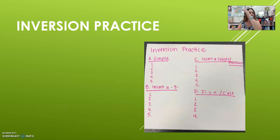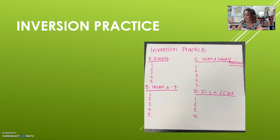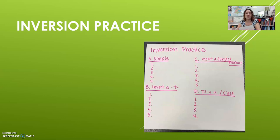You're going to need something to write with and something to write on, so pause this and find a piece of paper and a pen or a pencil. I set up a piece of paper as an example here — I would actually give myself a little more space to write. List A, B, C, D straight down. Here are the four categories we're going to practice with: simple sentences, ones where you insert a T in the middle, ones where you insert a subject pronoun, and then the phrases il y a and c'est.